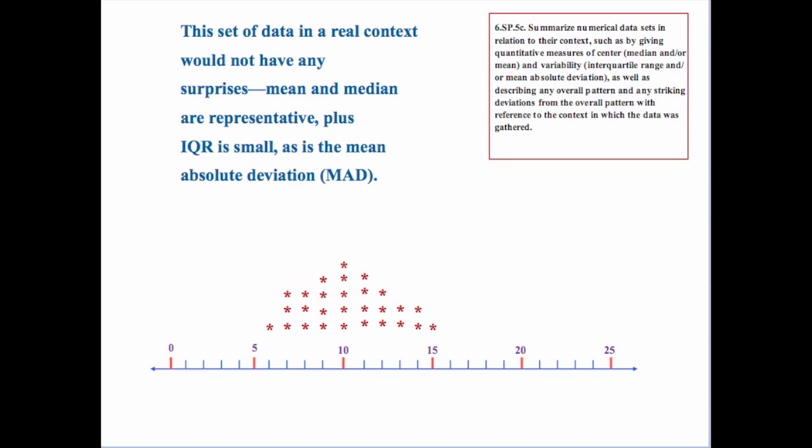So for example here, this is a nice set of data because there are no surprises. The mean and the median are going to be pretty representative, and in fact they're going to be pretty close to each other.